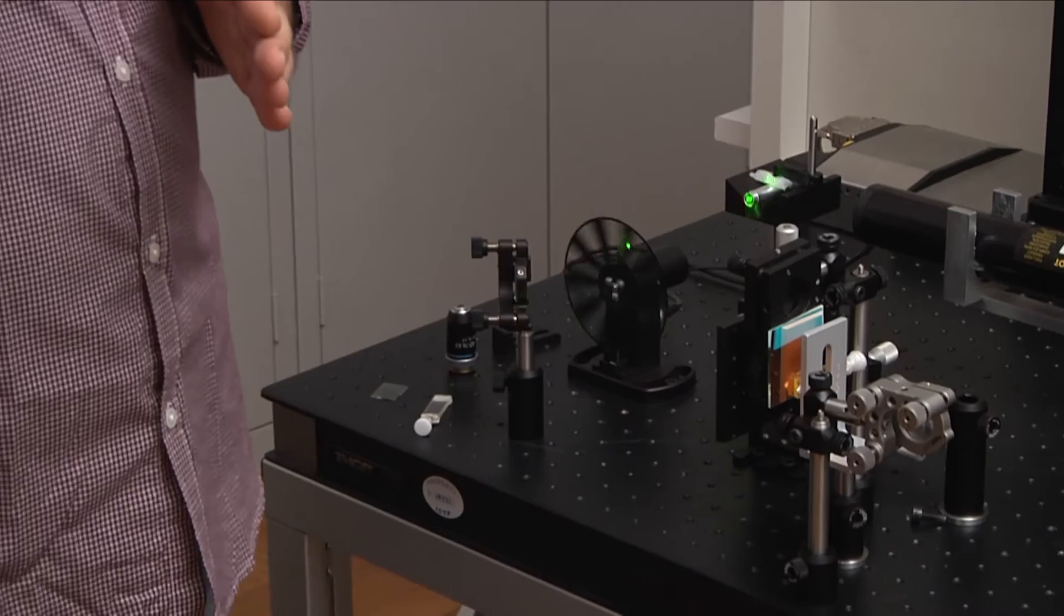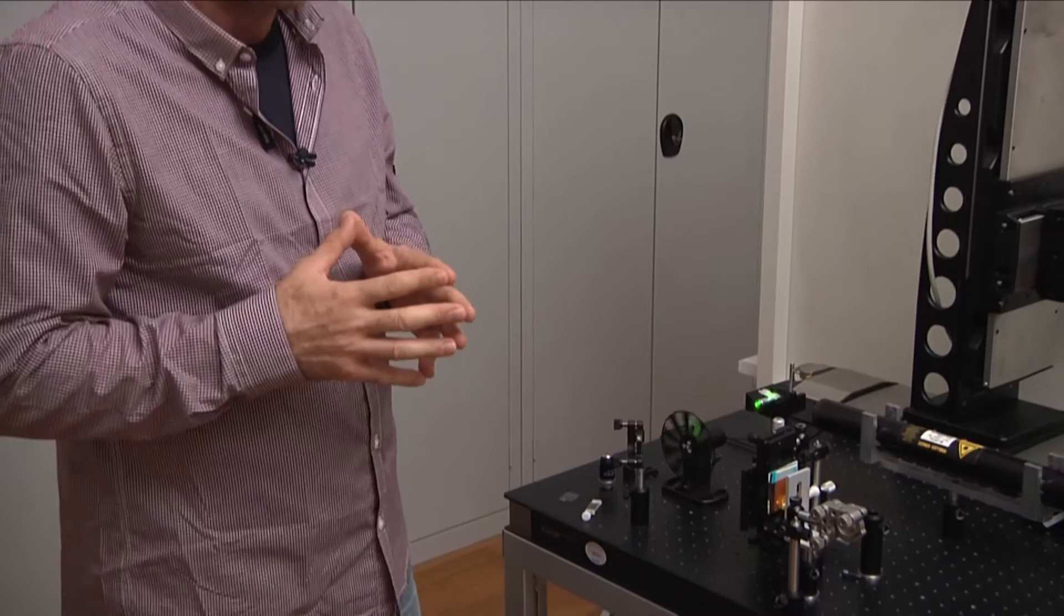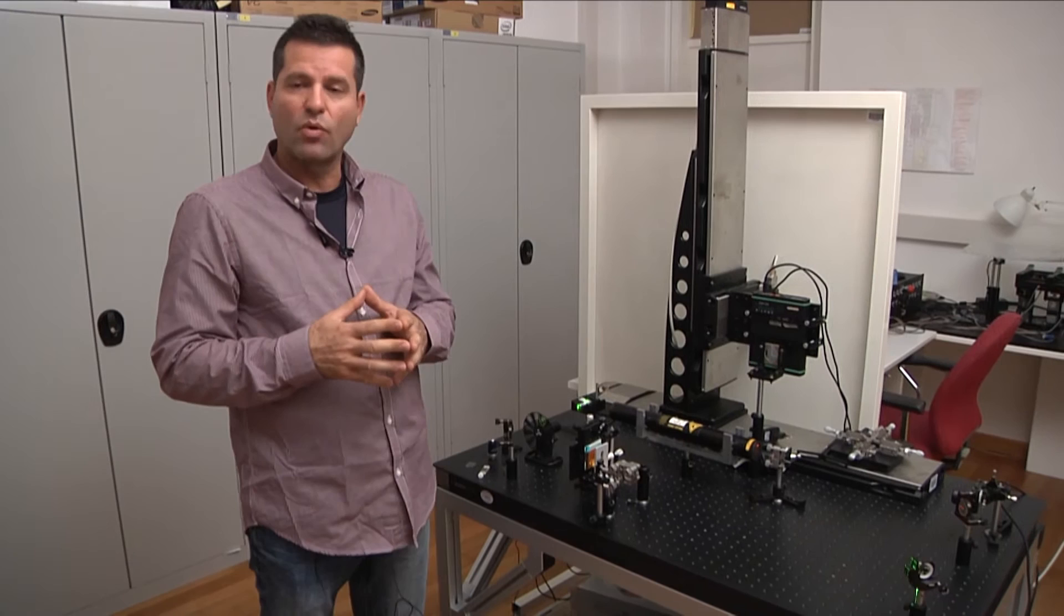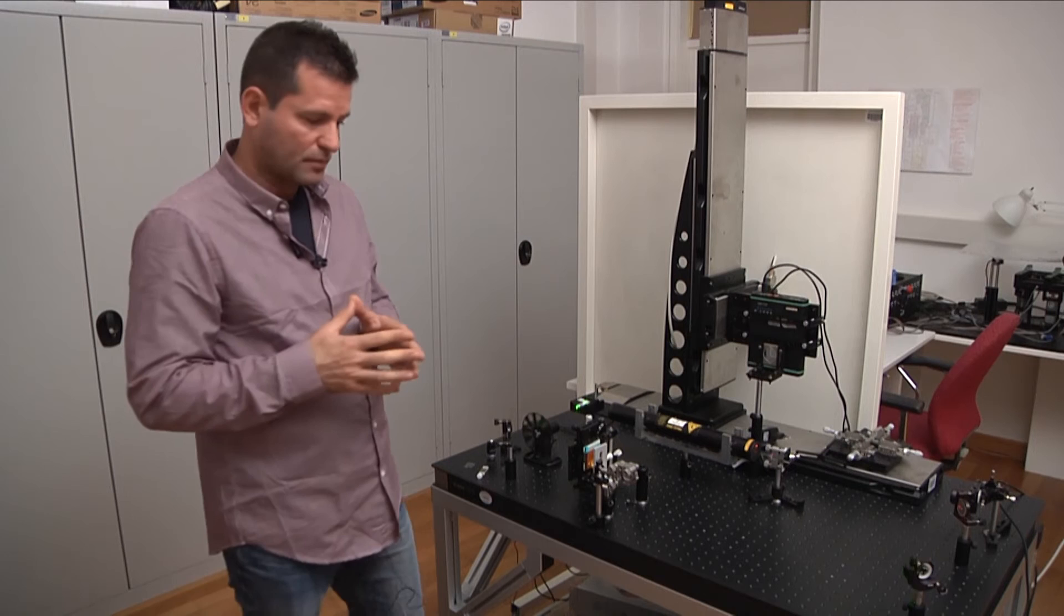the probe beam will be passing multiple times through the sample. And this, of course, increases the path length and increases the sensitivity of the method. For example, with this method, we were able to measure 21 nanograms per liter, this is PPT levels, per per trillions, of chrome 3,